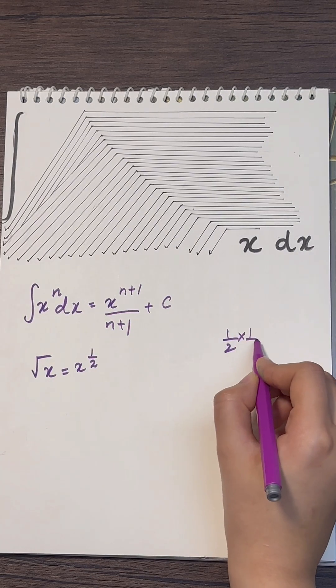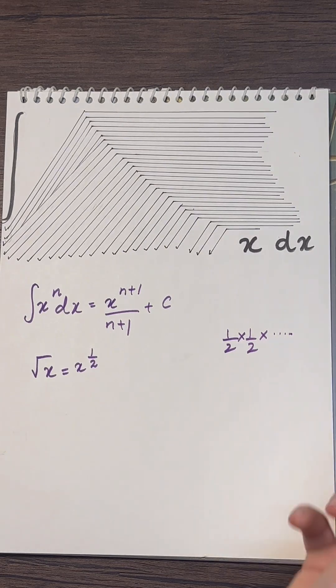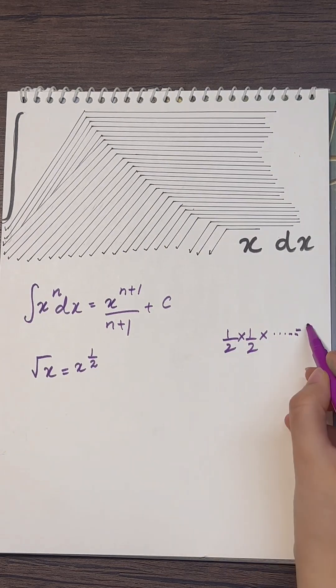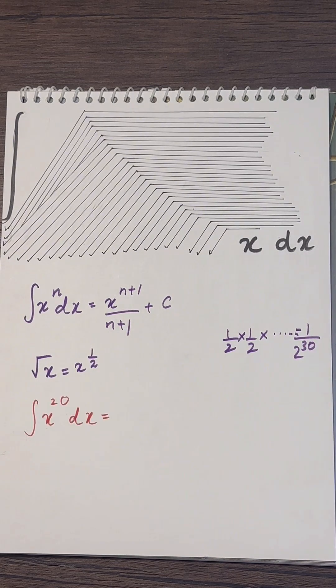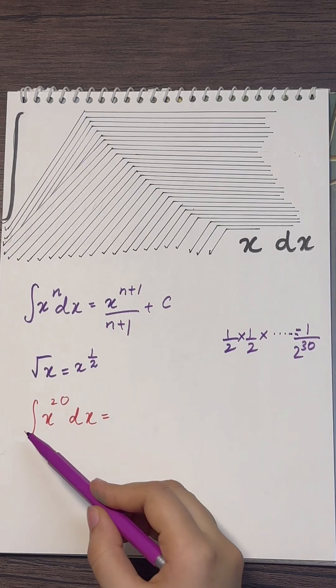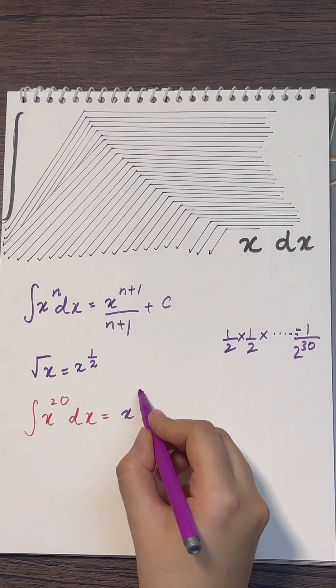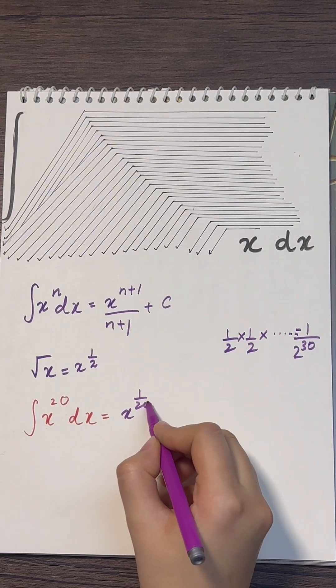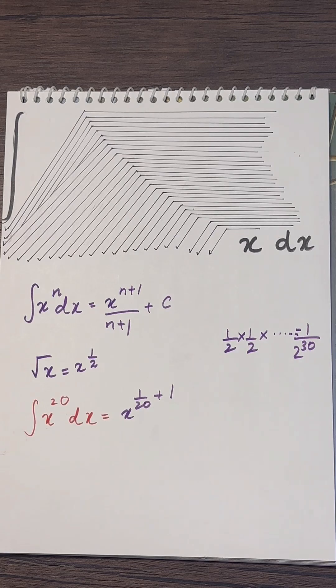So instead of doing a half times a half 30 times, I am raising 2 to the power of 30. So we're integrating x to the power 1 over 2 to the 30. All I need to do is add 1 to the power and then divide by the new power.